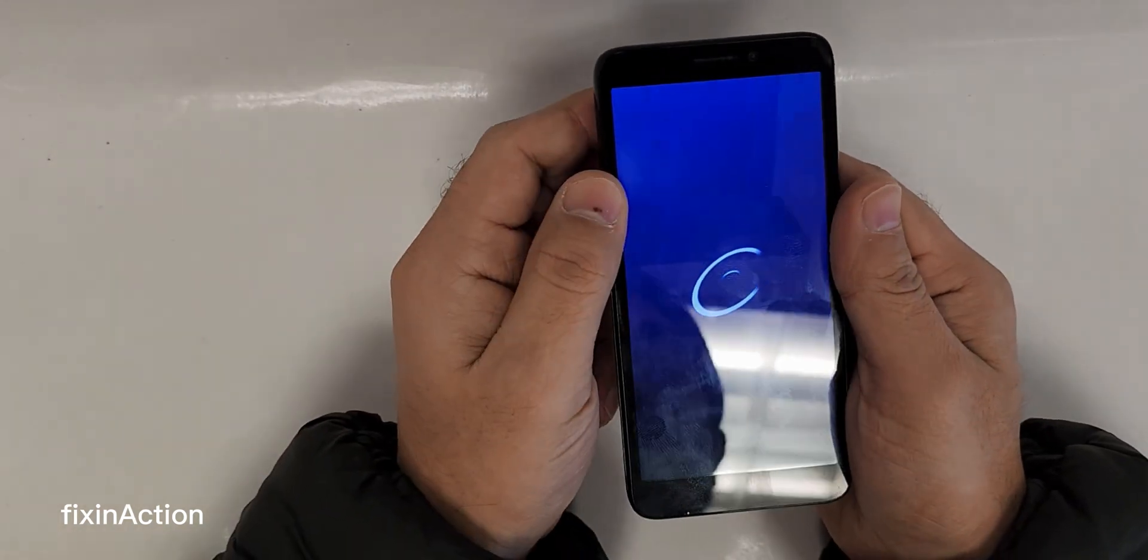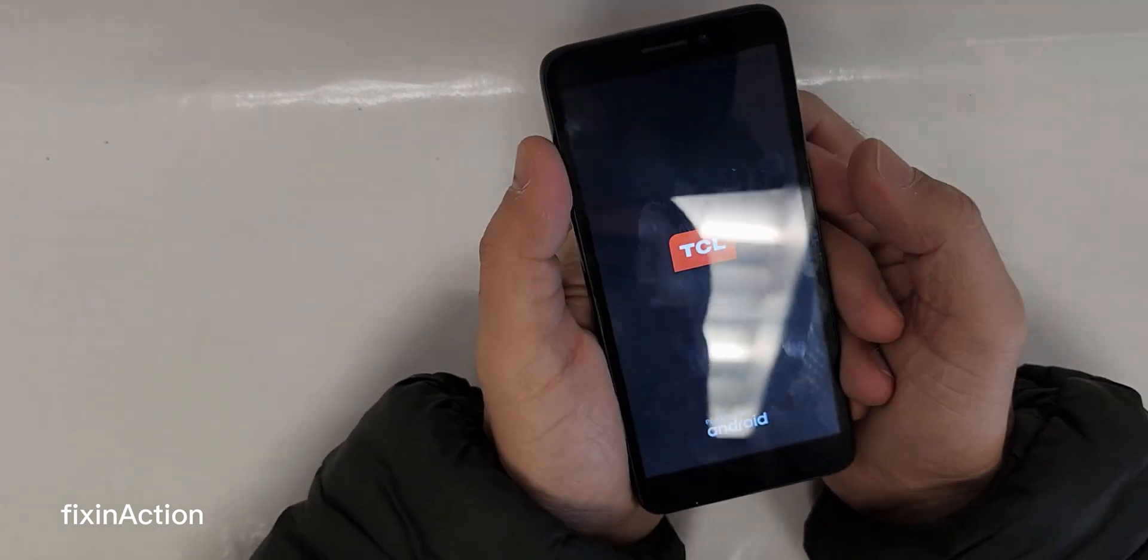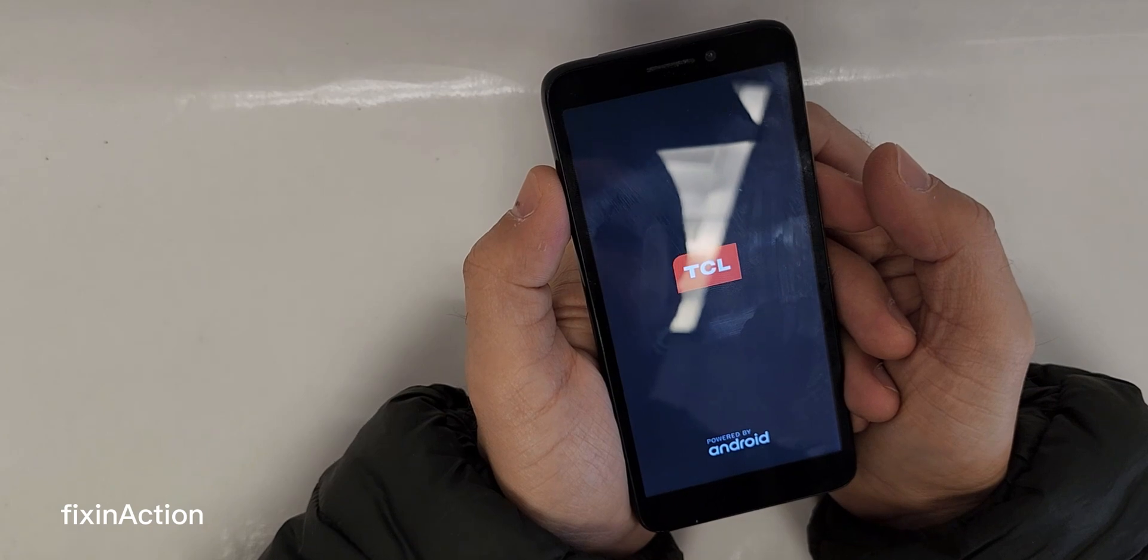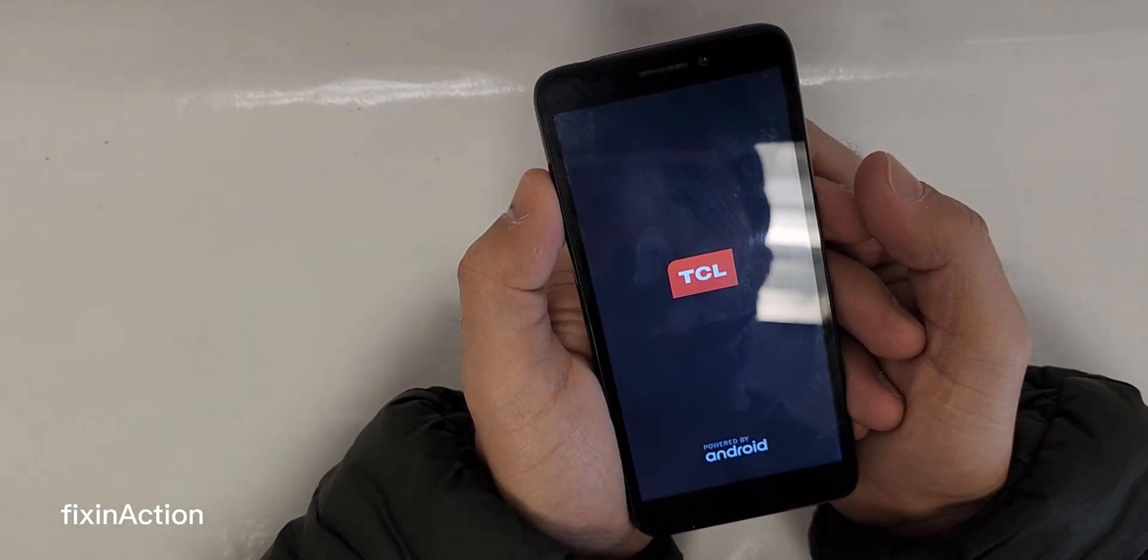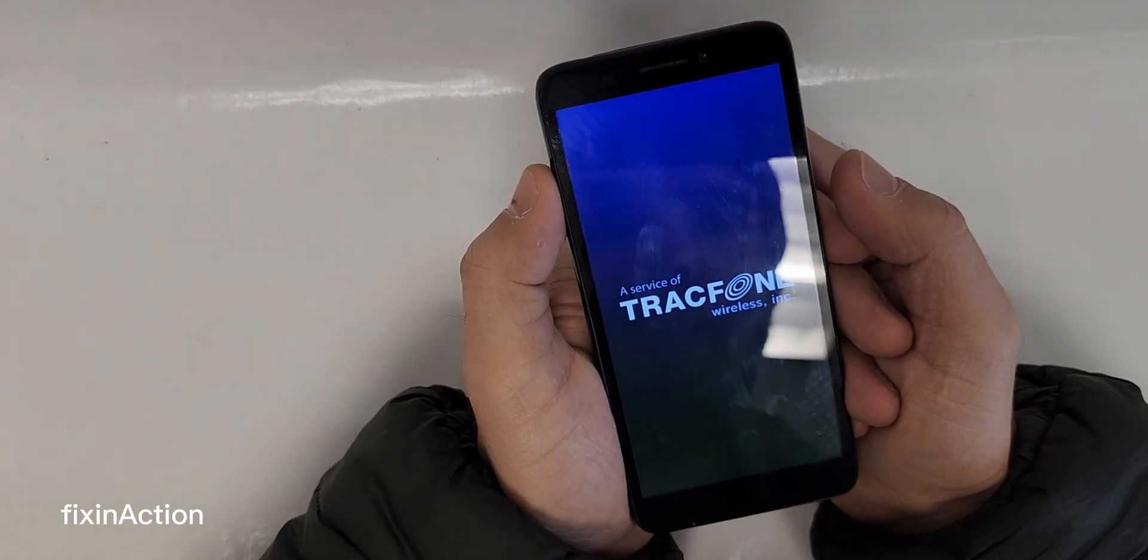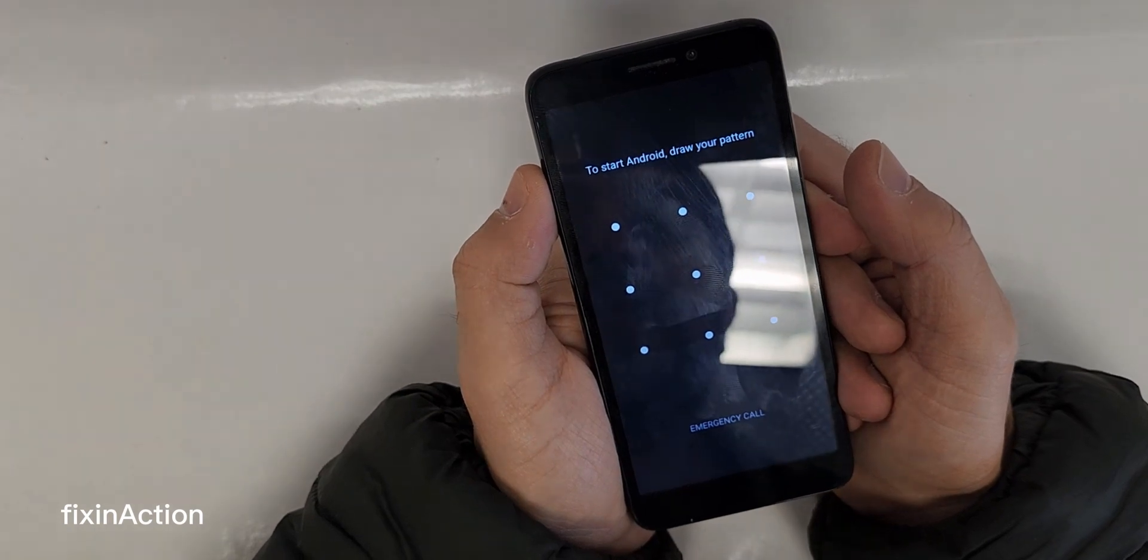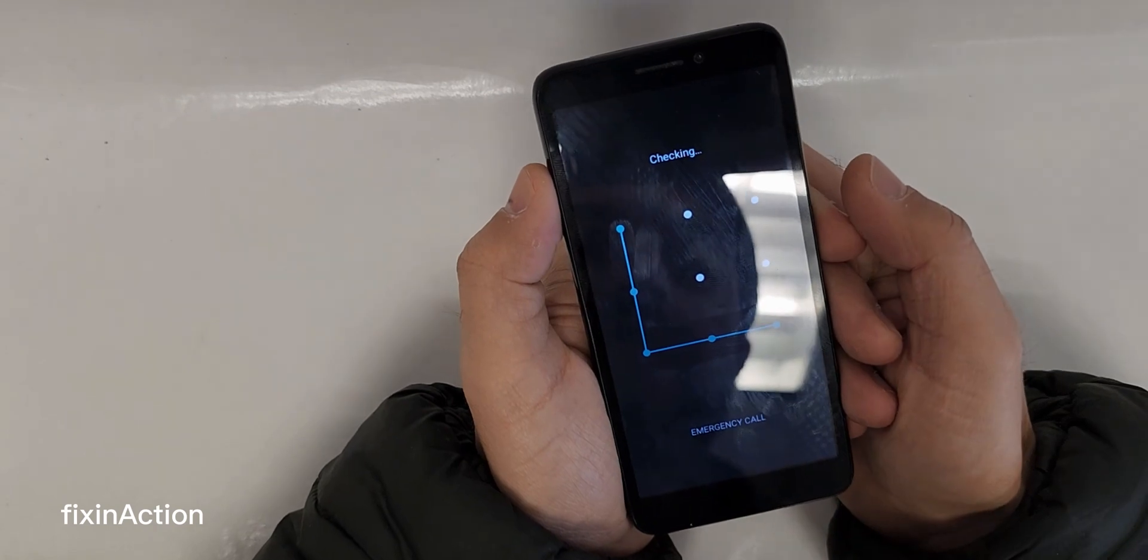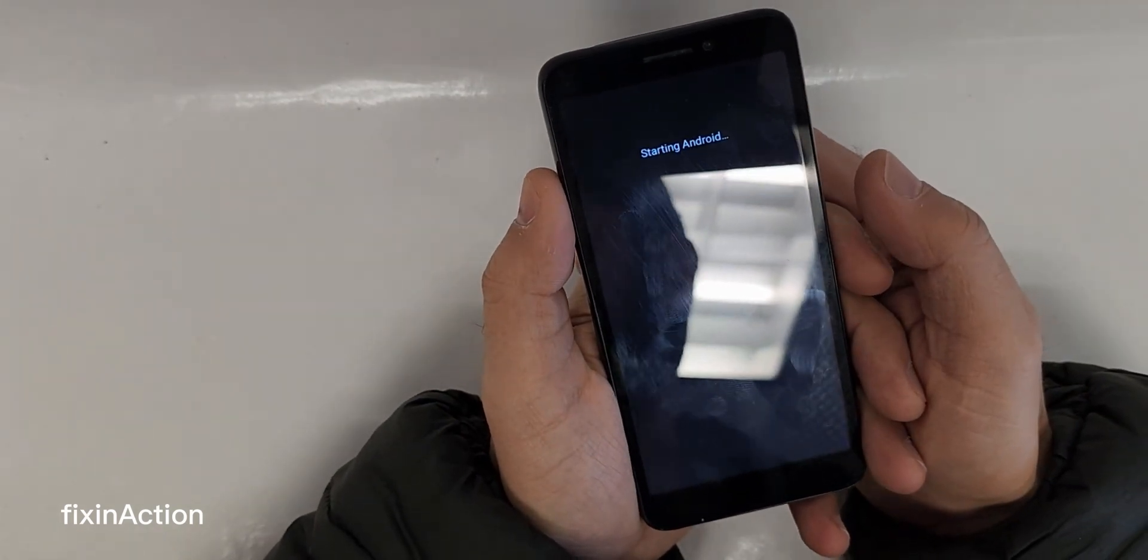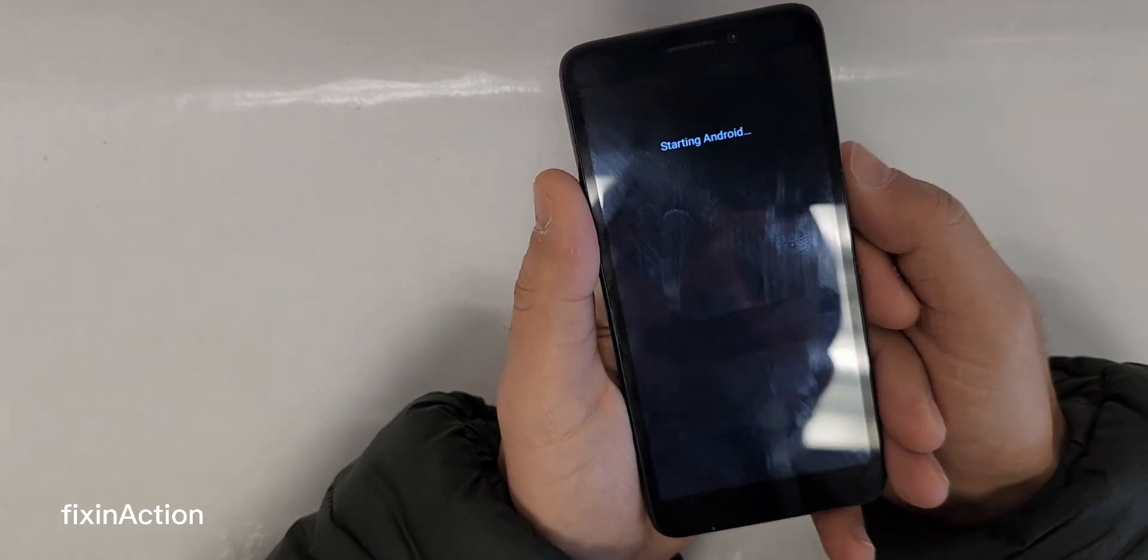Once you put a lock code on it, after that you have to restart the device. Just follow these steps and I hope you'll be able to bypass or get back to your Alcatel TCL A1 device, model number A501DL. If this method doesn't work, then we have to do the second method which is through the Quick Shortcut Maker. Don't forget to like, share and subscribe for more videos. We really appreciate your support.